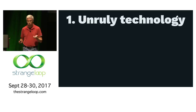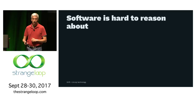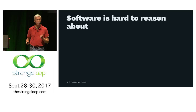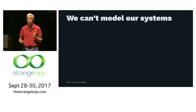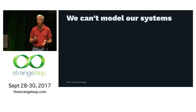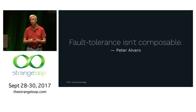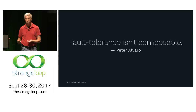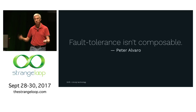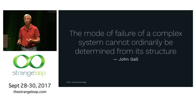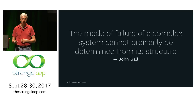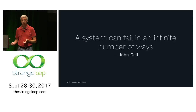The first concept is unruly technology — we build our systems out of stuff we really don't fully understand. Software is just really hard to reason about; it's hard for us as human beings to figure out what our software is going to do. We can't build large-scale models of how our system is going to behave. Peter Alvaro, a professor at UC Santa Cruz, has this phrase: 'fault tolerance isn't composable.' You don't get a fault-tolerant system by taking fault-tolerant pieces and putting them together. As Gall puts it, you can't figure out how a complex system is going to fail just by looking at how it's put together.